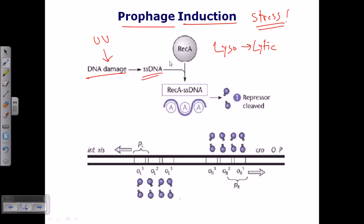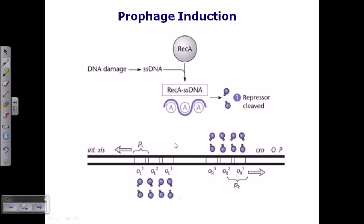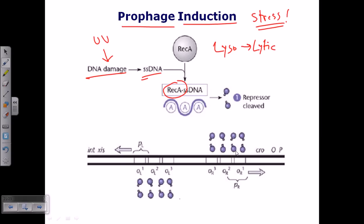Under stress, bacterial DNA is converted to single-stranded DNA, triggering expression of RecA proteins required for the DNA repair mechanism. The RecA proteins degrade the repressors bound to OR1, OR2, and OR3, cleaving all the Cro repressors. This inhibits Cro regulation, opening up control between lytic and lysogenic cycles, and transcription is re-enabled in both left and right directions since there is no Cro protein to regulate it.